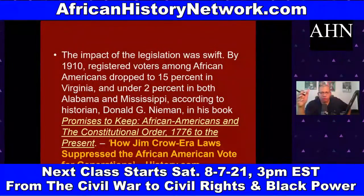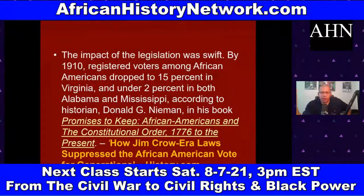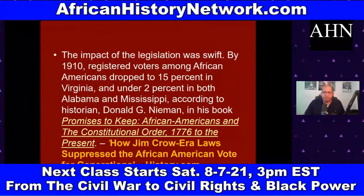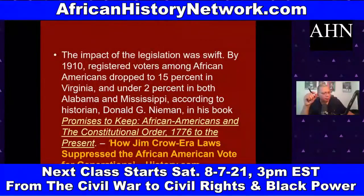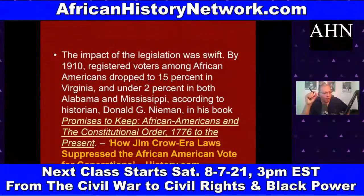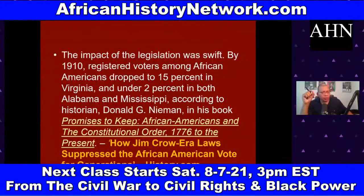According to historian Donald G. Nyman in his book 'Promises to Keep: African Americans and the Constitutional Order, 1776 to Present,' by 1910 registered voters among African Americans had dropped to 15 percent in Virginia and under 2 percent in both Alabama and Mississippi. This is also covered in a History.com article — 'How Jim Crow Era Laws Suppressed the African American Vote for Generations.'